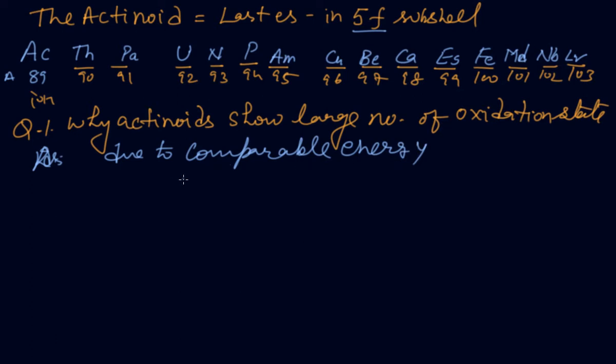Because it will come as 5f, 6d, and 7s, and their energies are similar to each other. The student has been beaten so he will go to whoever has less energy. Due to the comparable energy, they are showing a greater number of large oxidation states. This is a VIP question.